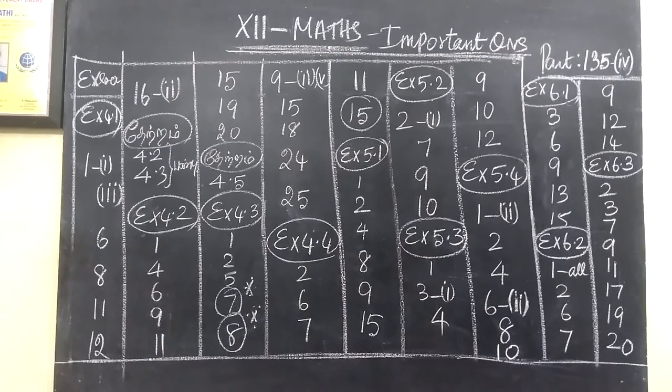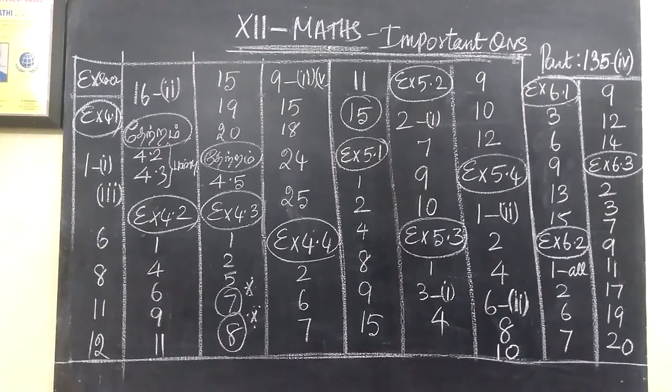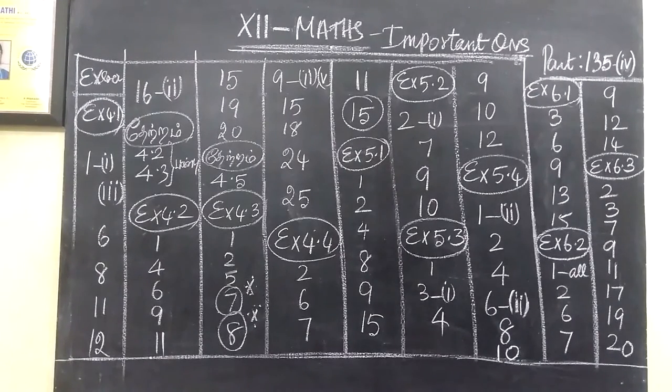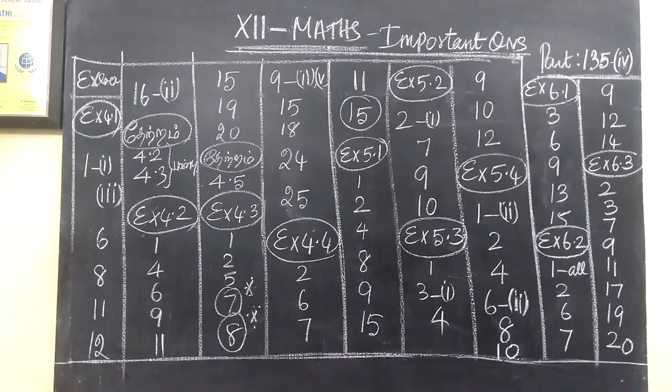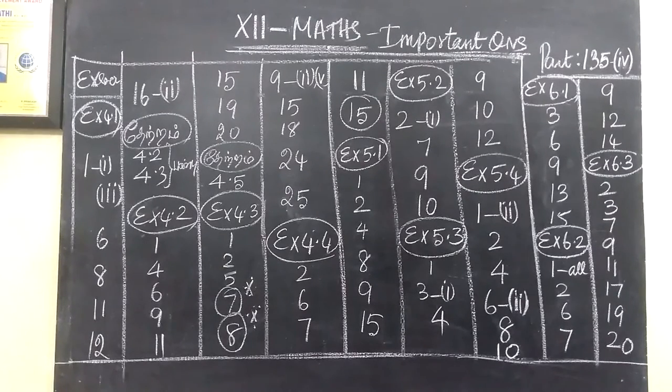Then 16 is the subdivision 2. Theorem is 4.2, 4.3. Then exercise 4.2 is 14, 6, 9, 11. Then 15, 19, 20. This is theorem 4.5.